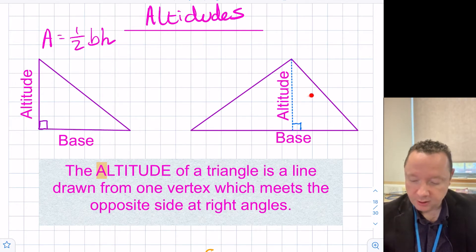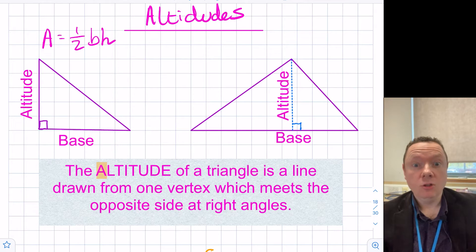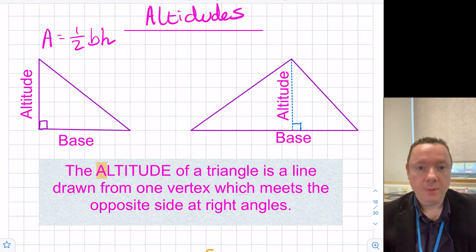I could draw another line from here to here hitting at right angles and that would be an altitude and another line from here to here. One thing to note is an altitude often does not hit the other side and cuts it in half. It does not cut it in half. It would only cut it in half if it was an isosceles triangle or an equilateral triangle. So bear that in mind.